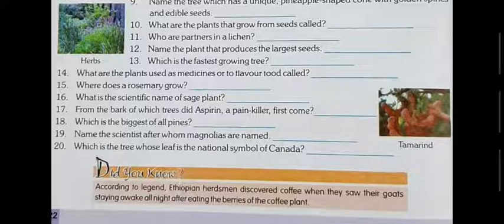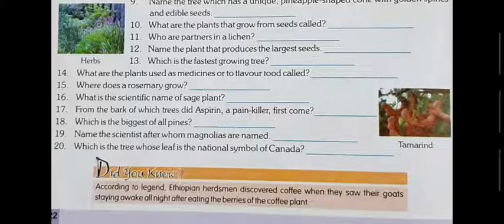Question eighteen: which is the biggest of all pines? The answer is Sugar Pine — S-U-G-A-R P-I-N-E. Question nineteen: name the scientist after whom magnolias are named. The answer is Pierre Magnol — P-I-E-R-R-E M-A-G-N-O-L.